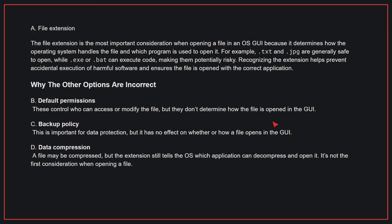For example, .txt and .jpg are generally safe to open, while .exe or .bat can execute code, making them potentially risky. Recognizing the extension helps prevent accidental execution of harmful software and ensures the file is opened with the correct application.